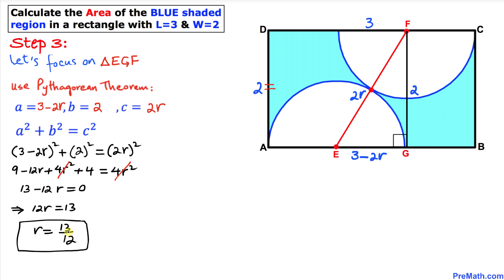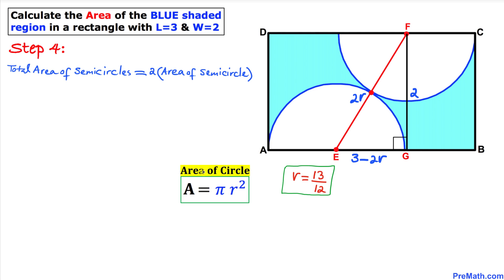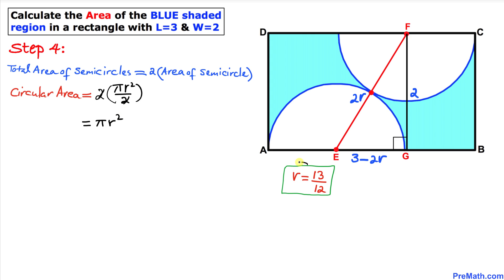Next, we find the combined area of the two semi-circles. Two semi-circles equal one full circle, so the total circular area is π r². Substituting r = 13/12, we get π × (13/12)² = 169π/144.